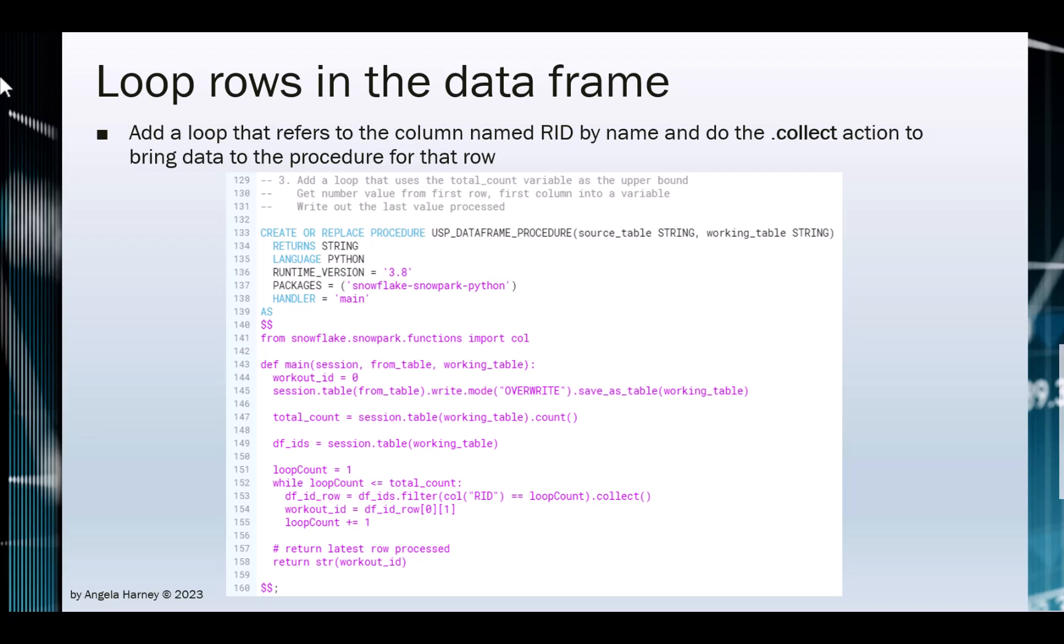The .collect takes the action of bringing the row of data to the stored procedure so we can access the values in that row of data. Row 154 then sets a variable equal to the first row, second column, which is the id field.